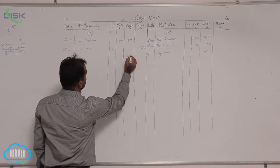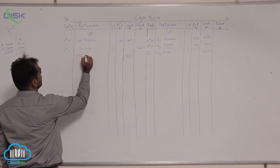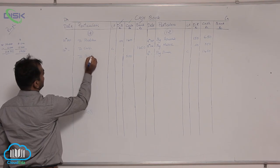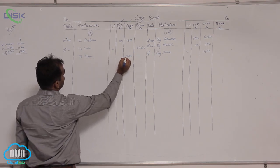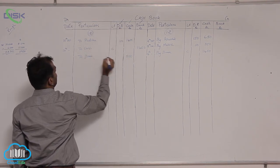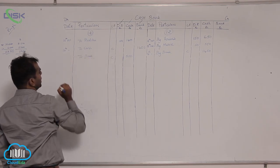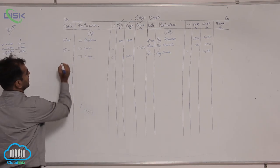So entering 500 in cash column, the reason is you are getting the money from bank, so write bank in particulars, cash and bank are involved, contra entry, the date being 18th.